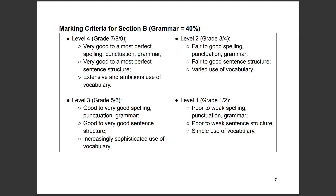For the grammar marking criteria: level four (grades 7–9) requires very good to almost perfect spelling, punctuation, and grammar; very good to almost perfect sentence structure; extensive and ambitious vocabulary. Level three (grades 5–6): good to very good SPaG and sentence structure; increasingly sophisticated vocabulary. Level two (grades 3–4): fair to good SPaG, fair sentence structure, varied vocabulary. Level one: poor to weak SPaG, poor sentence structure, simple vocabulary.